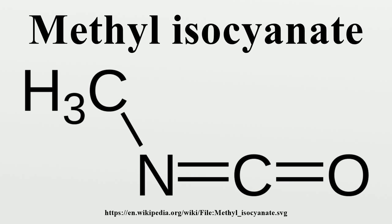Uses: Methyl isocyanate is an intermediate chemical in the production of carbamate pesticides. It has also been used in the production of rubbers and adhesives.